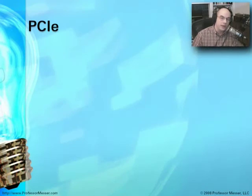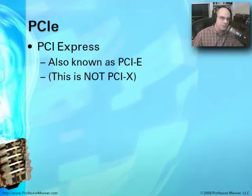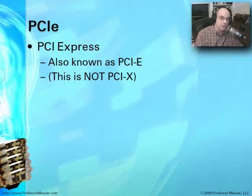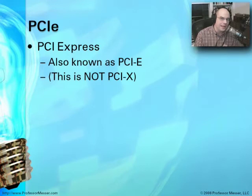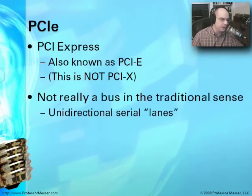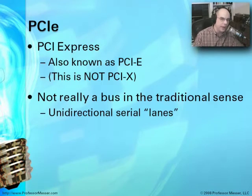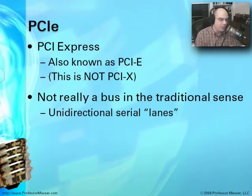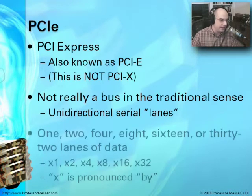These days, what you'll start to see with video and other interfaces is something called PCI Express — we'll call it PCIE. You'll often hear it referred to, talked about, and written down today as PCI Express. This is not PCIX, which is a different type of interface. PCI Express isn't really what we've traditionally thought of as a bus — this is a different way of communicating. Instead of a parallel pathway where all bits go at once, this is called a serial bus, and we refer to it as serial lanes.